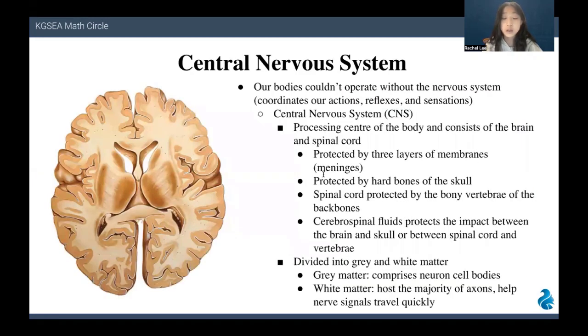Our bodies couldn't operate without the nervous system which coordinates our actions, reflexes, and sensations. The central nervous system processes the center of the body and consists of the brain and the spinal cord. It is protected by three layers of membranes called meninges and further protected by hard bones of the skull. The spinal cord is protected by the bony vertebrae of the backbones, and the cerebrospinal fluid protects against impact between the brain and skull or between the spinal cord and vertebrae. The brain can be further seen to be divided into gray and white matter. The gray matter comprises neuronal bodies, while the white matter hosts the majority of axons and helps nervous signals to travel quickly.